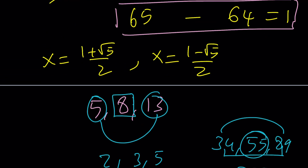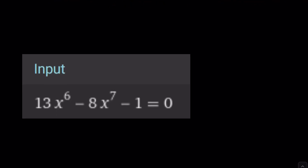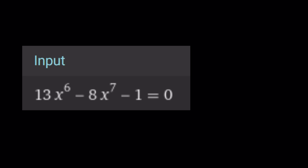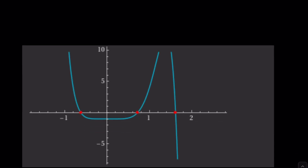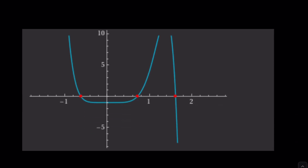I graphed this function for you. Let's call it f of x — the original expression minus 1. The graph shows that these are the golden solutions, and there's also another solution between 0 and 1 that satisfies the equation. Those are the only real solutions. Since the equation is septic, it might have more complex roots, but we have three real solutions as you can see.